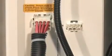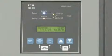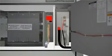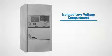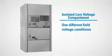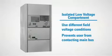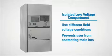This transformer allows the user to change the incoming voltage setting simply by reprogramming the voltage in the microprocessor controller and moving the plug to the proper voltage. This design not only allows the ATS to be used with different field voltage conditions, but also prevents a user from inadvertently contacting the main bus during maintenance.